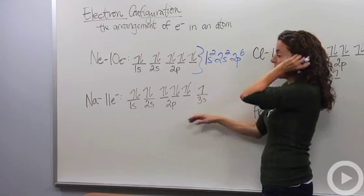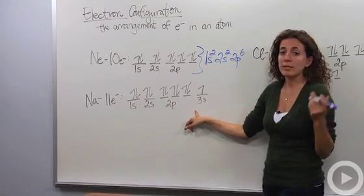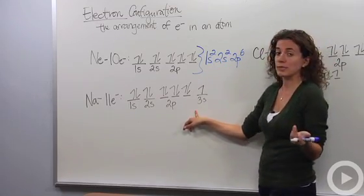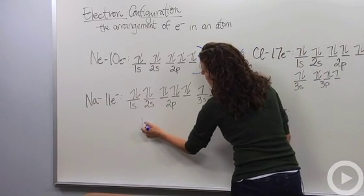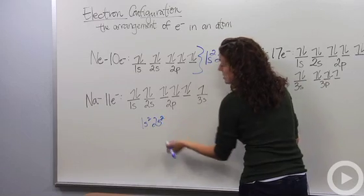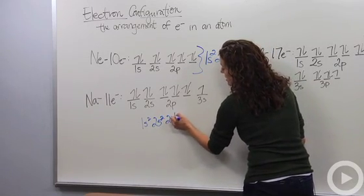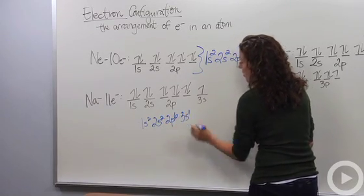Alright, so let's do something a little bit more. Let's do sodium. Sodium has 11 electrons in its neutral state. So, okay, awesome. We're going to say this has 1s2, 2s2, 2p6, 3s1.